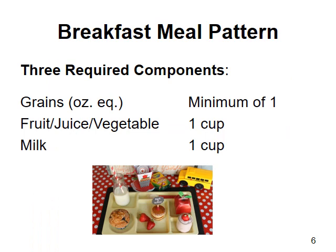The breakfast meal pattern consists of three required components: a grain at a minimum of one ounce equivalent, one cup of fruit or vegetable or a combination of fruit and vegetable juices, and eight fluid ounces of milk. At a minimum, all three of these components must be offered, but as the menu planner, you may serve more than the minimum.